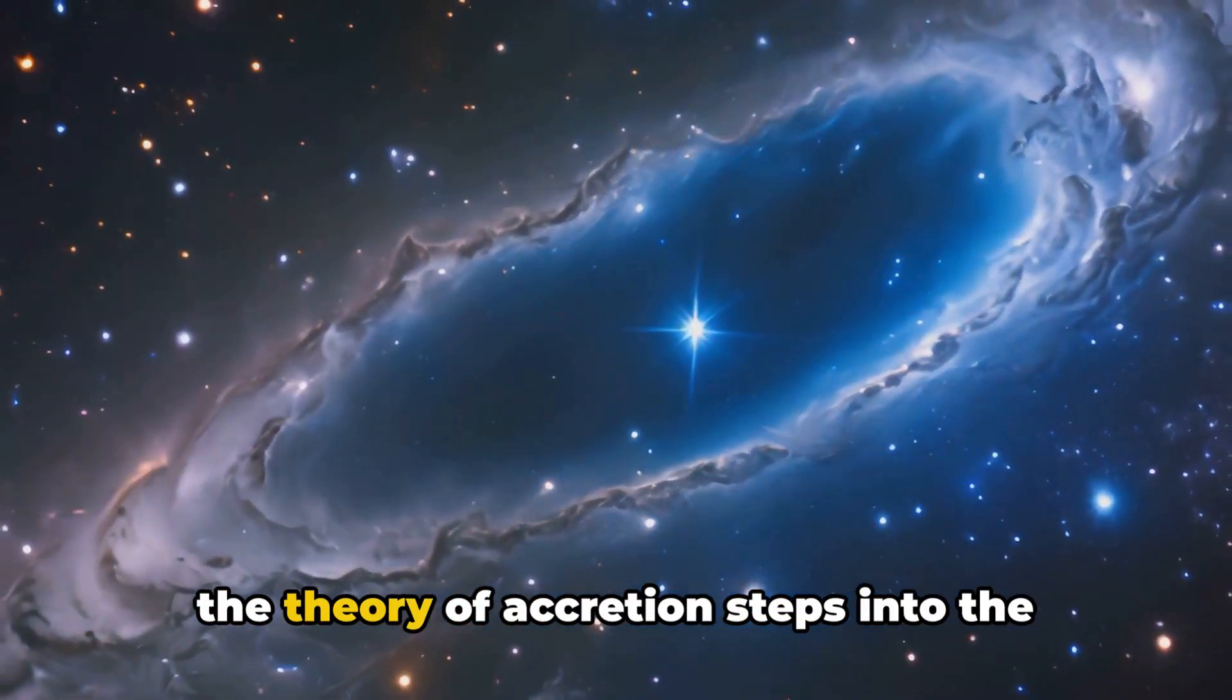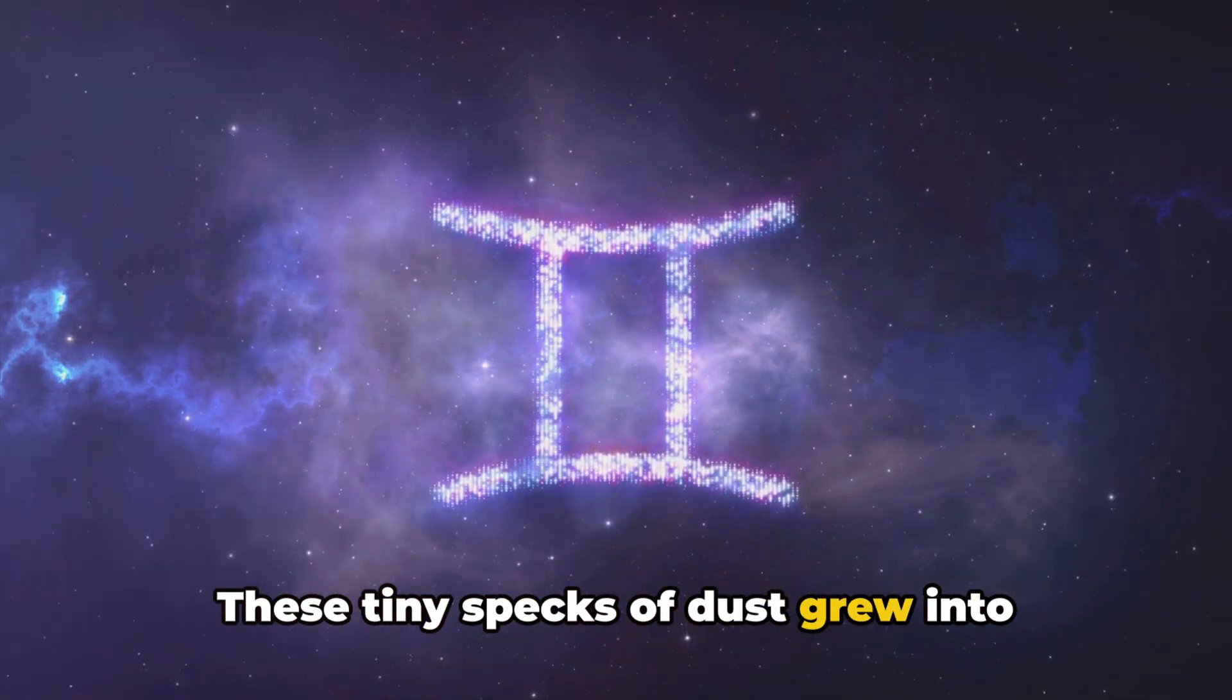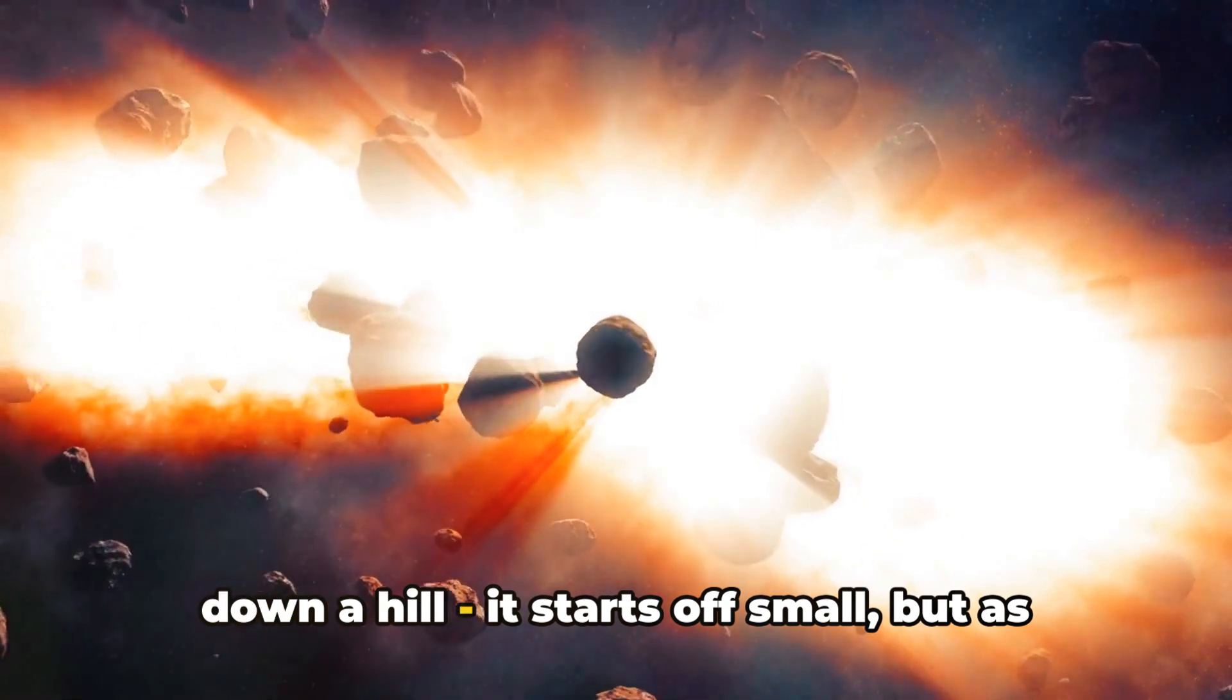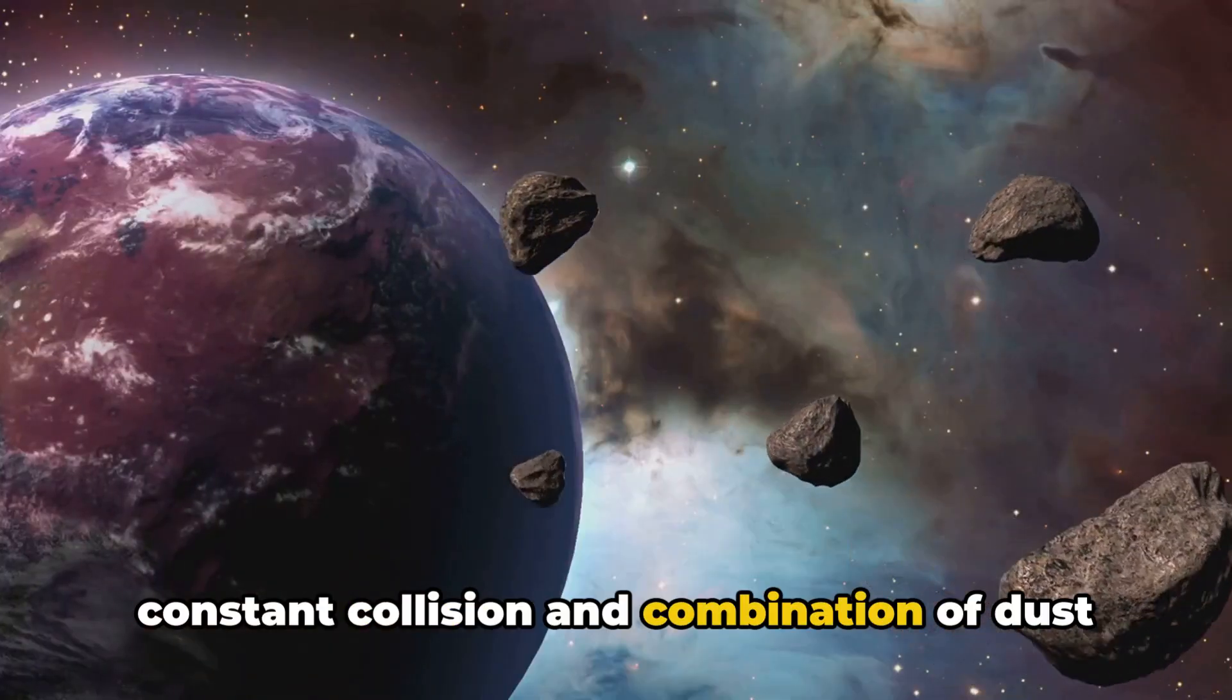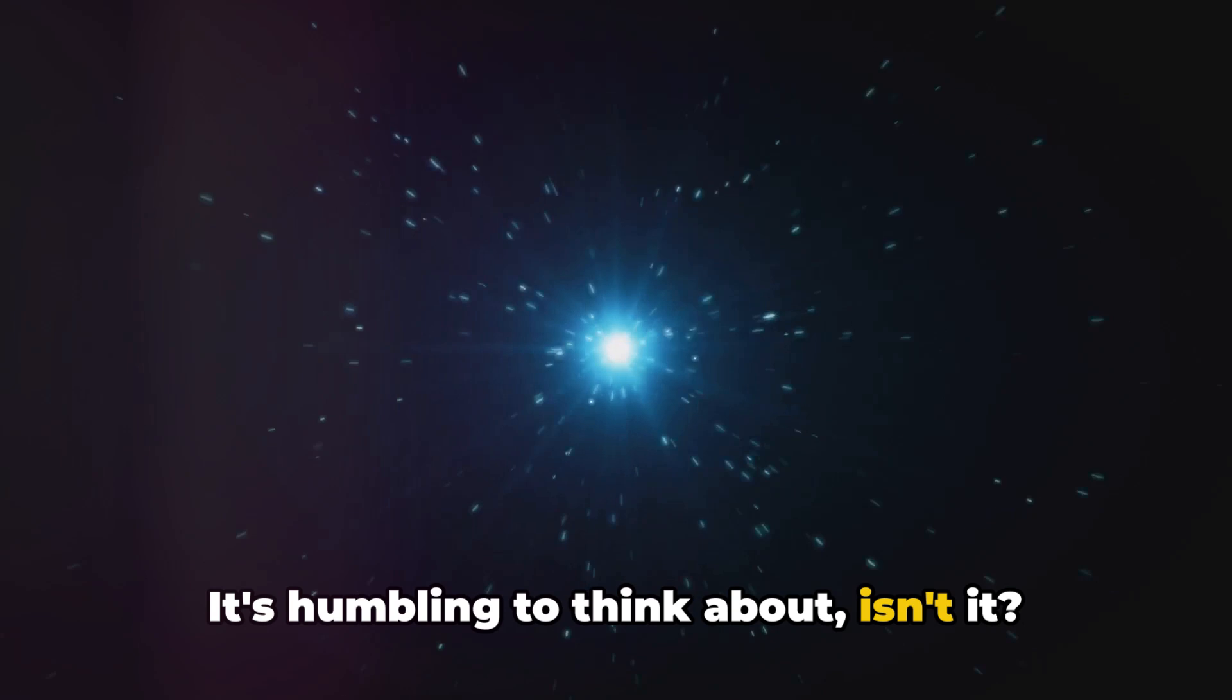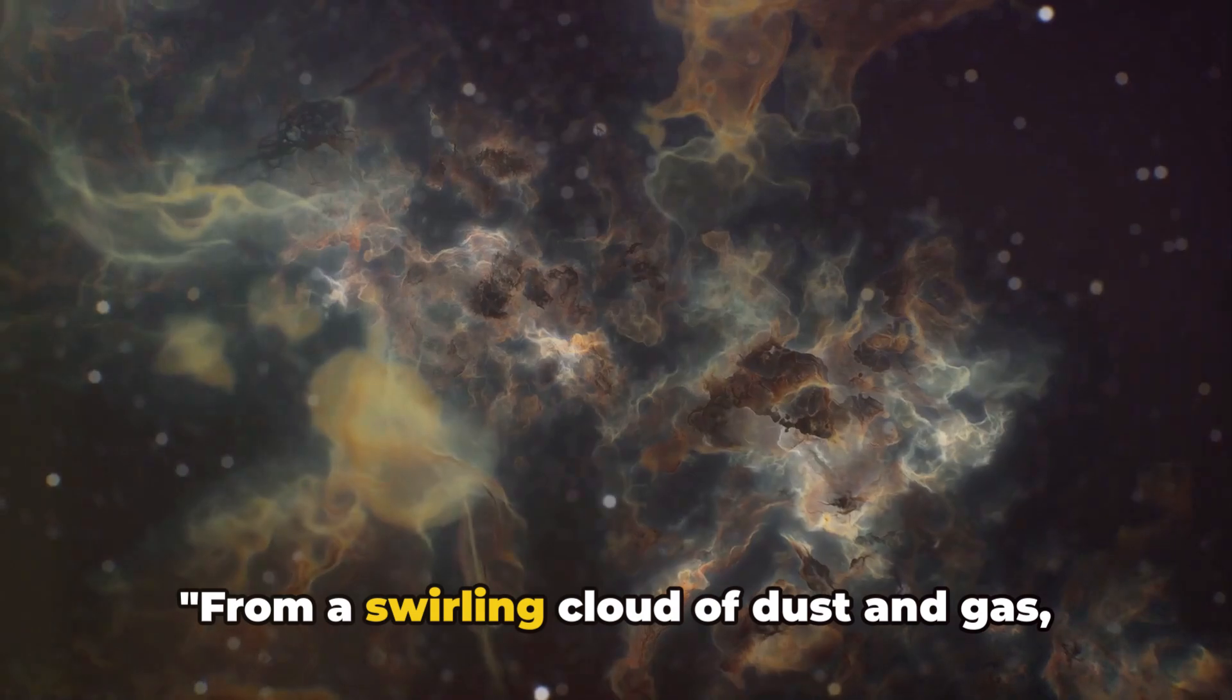But what about the planets? That's where the theory of accretion steps into the cosmic spotlight. Tiny dust grains within the nebula started sticking together, colliding and growing larger over time. These tiny specks of dust grew into planetesimals and eventually into the planets we know today. It's a process akin to rolling a snowball down a hill. It starts off small, but as it rolls it picks up more snow, growing larger and larger, until it's a full-fledged snowman. Similarly, our planets formed from the constant collision and combination of dust and rocks. Each collision contributing to the building blocks of our solar system. It's humbling to think about, isn't it? From a cloud of dust and gas, through a series of cosmic collisions and accretions, the familiar celestial bodies we see in our night sky were formed. From a swirling cloud of dust and gas, our home system was born.